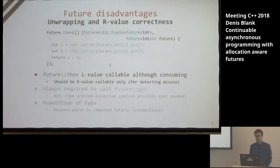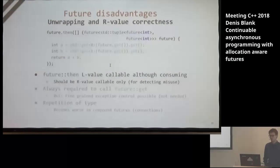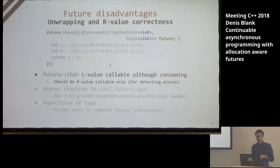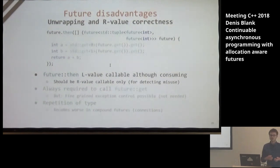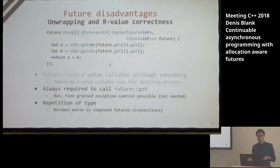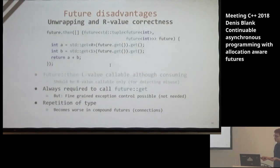There's a problem with future.then: it's designed as a consuming method, which means it invalidates the future itself. You shouldn't access the future after that anymore because it was moved elsewhere. The fix would be to qualify the future.then method as R-value callable only. Also, the lambda you pass to future.then always accepts the future itself, and you need to access the future to get the value. This could lead to immense code overhead because you have to unwrap the arguments first — in one example, you need three calls to .get for each future.